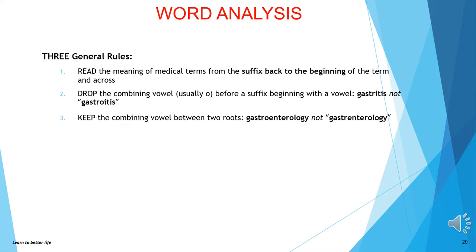Remember these three general rules: read the meaning of medical terms from the suffix back to the beginning of the term and across; drop the combining vowel, usually O, before a suffix beginning with a vowel — gastritis, not gastro-itis; and keep the combining vowel between two roots — gastroenterology, not gastenterology.